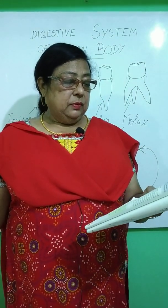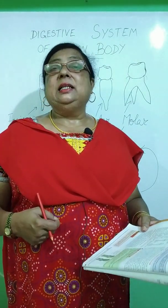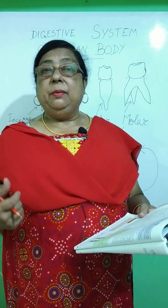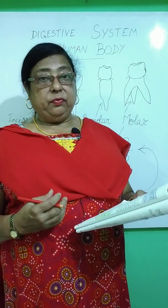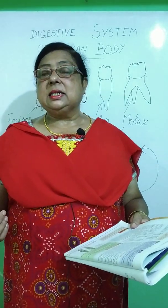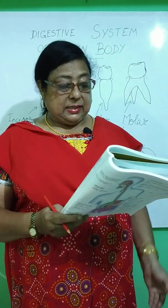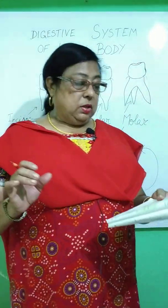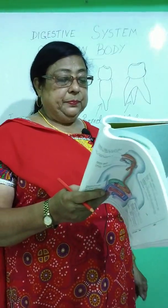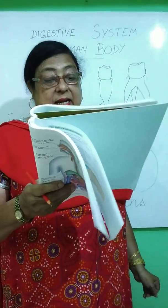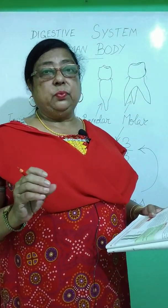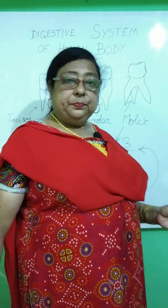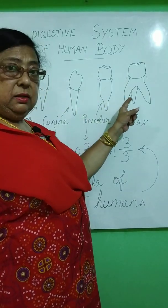Digestion in human beings is extracellular — it takes place throughout the alimentary canal. The various organs involved are the mouth, oesophagus, stomach, small intestine, large intestine, rectum, and anus. The digestive system comprises all these organs, and digestion is associated with various glands called digestive glands.